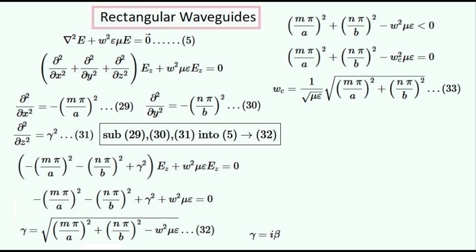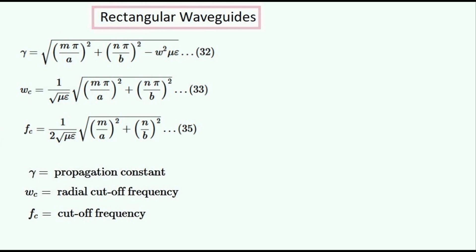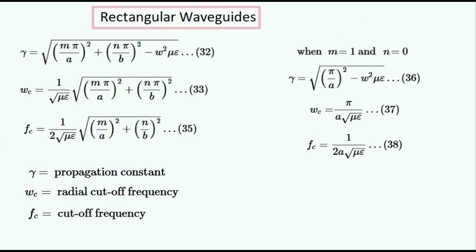Making omega_c the subject of this equation gives us this formula for the cutoff radial frequency. The cutoff frequency is related to the cutoff radial frequency with this equation. So after substituting in and simplifying, we get this formula for the cutoff frequency of the waveguide. It can be shown that the lowest or fundamental mode occurs for TE when m is equal to one and n is equal to zero. Substituting these values in gives us the equations for the fundamental mode.